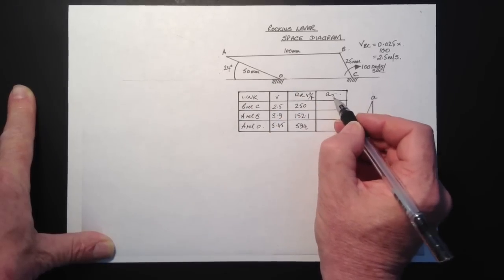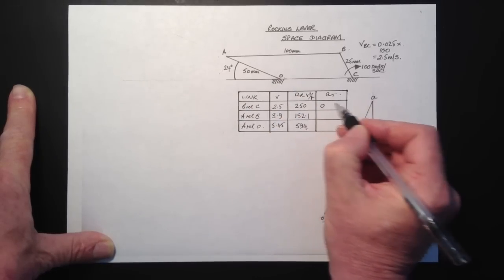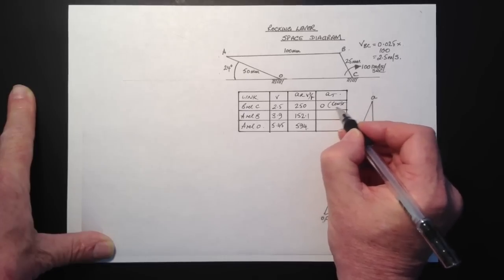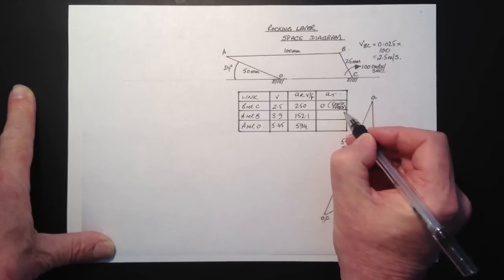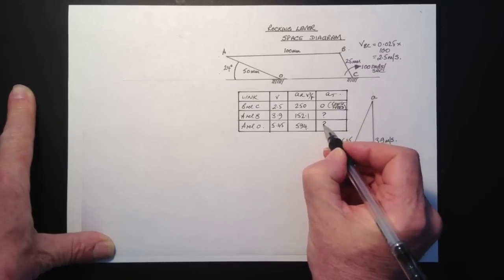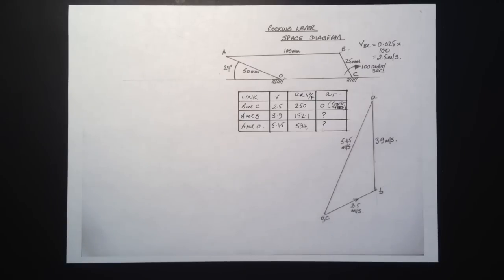So now we need to move on to tangential components. Then we can see that the first one is zero because this is a constant speed so it's not accelerating in an angular fashion. Therefore the tangential is zero. The other two are unknown. So we'll simply put these in as question marks at this moment.